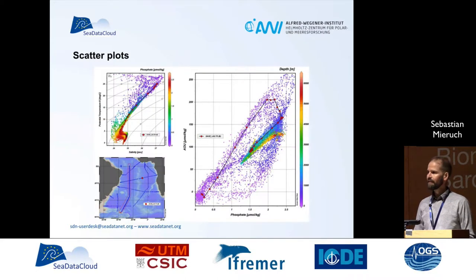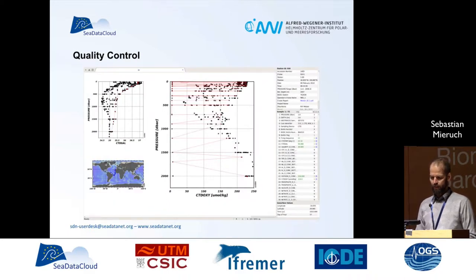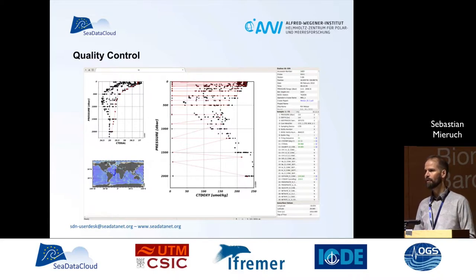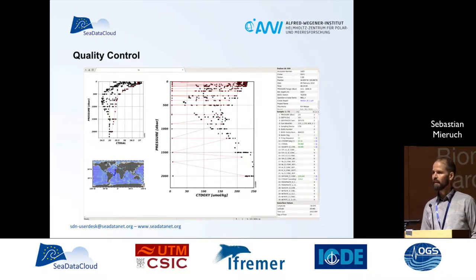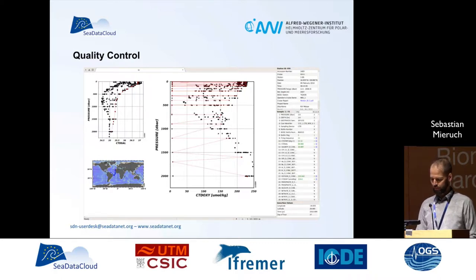We can create scatter plots to analyze data, and also use scatter plots and other plots for quality control. For example, in the cDataNet community, we can identify outliers and flag them.